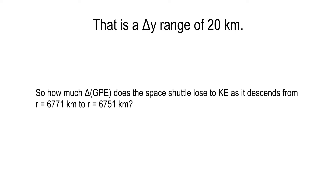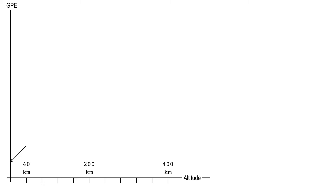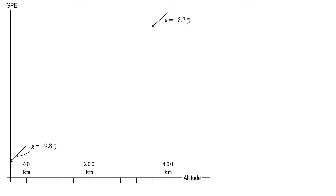Looking at a GPE diagram with a vertical scale for GPE: there's an arrow in the first 20 kilometers representing the value of g here on terra firma — negative 9.8 m/s². And up at earth orbit (400 km), there's another arrow representing g-prime = -8.7 m/s². The tilt of these arrows represents the change in GPE per meter. I did this carefully — the two arrows are not the same tilt, though they look pretty close.